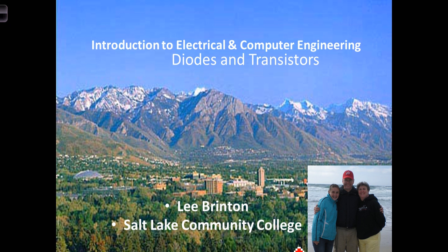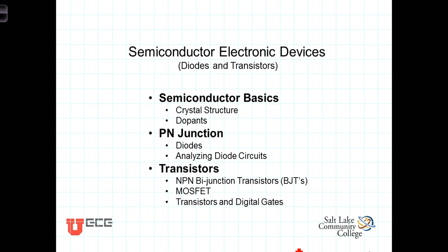In this next unit, we're going to look at semiconductor devices, in particular, diodes and transistors. My name is Lee Brinson. I'm an electrical engineering instructor at Salt Lake Community College. We'll start out our discussion by looking at the basics of semiconductors. We'll look at the crystal structure, the type of electrical bonding that takes place, and we'll also introduce the concept of dopants. We'll then look at the PN junction and how it forms a device known as a diode, how diodes act, and introduce some basic concepts associated with analyzing circuits that contain diodes.